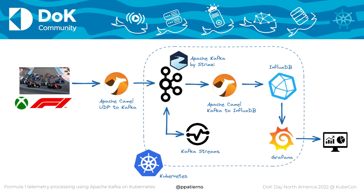The overall picture of this project: on one side we are getting Formula One telemetry data. We don't have real Formula One cars, but we can use the Formula One game running on Xbox or any other platform, which is able to send telemetry in real time on a UDP port while you are playing. The first problem is reading from UDP and moving data to Kafka running on Kubernetes in the cloud. Apache Camel as an integration framework allows you to write a simple application with simple routes using a DSL language in order to read from a source and write to a destination.